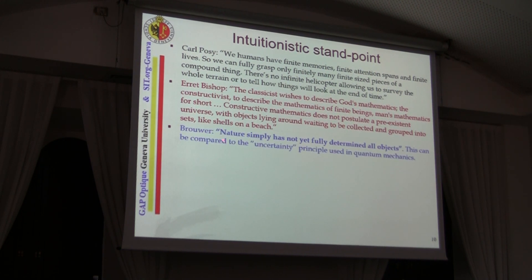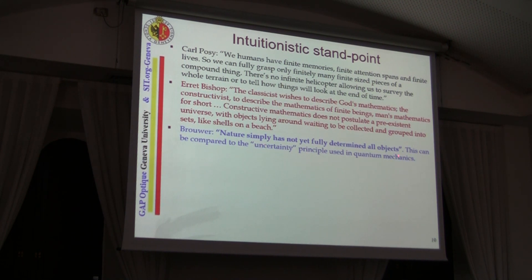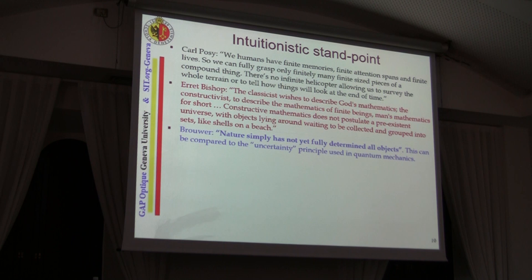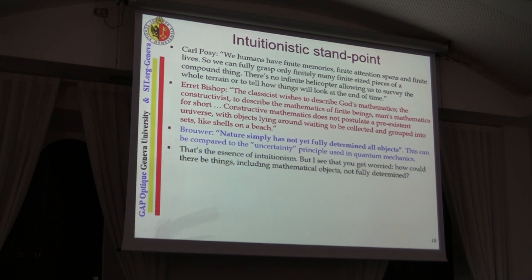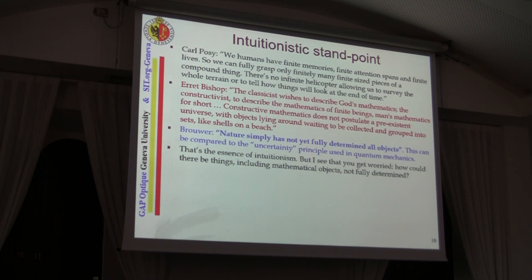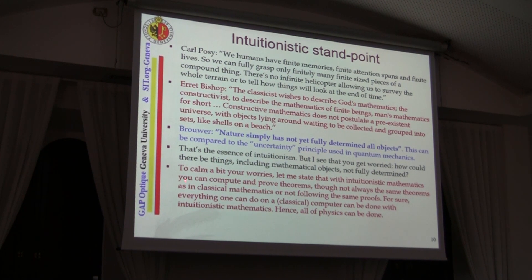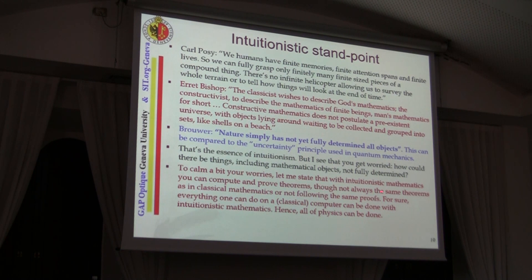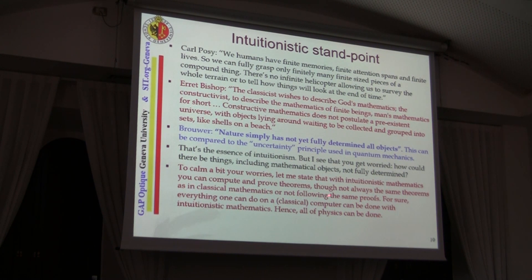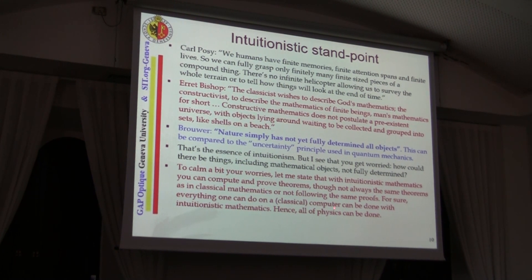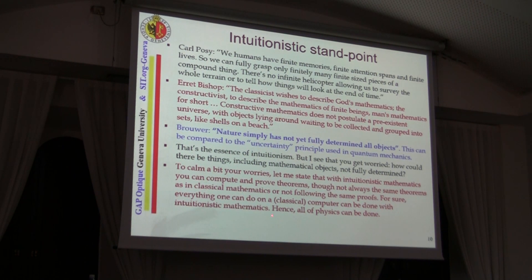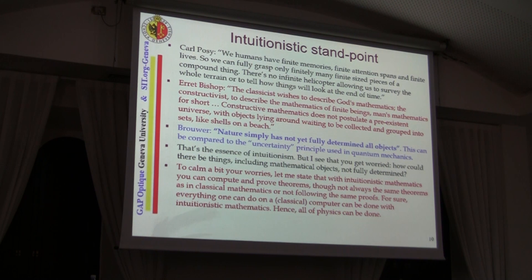Brouwer himself wrote that nature simply has not yet fully determined all objects — a bit like the uncertainty principle in quantum mechanics that we are more familiar with. That's the essence of intuitionism. An important thing to state is that with intuitionistic mathematics you can compute and theorize. Everything one can do on a classical computer can be done within intuitionistic mathematics. So we can certainly do physics with intuitionistic mathematics.